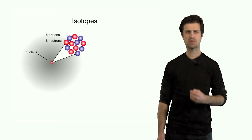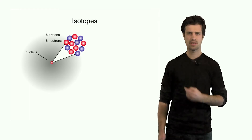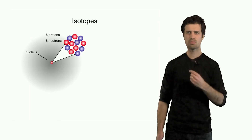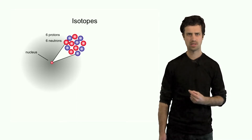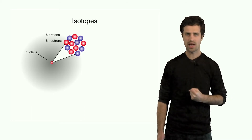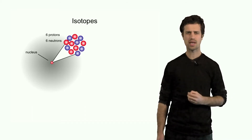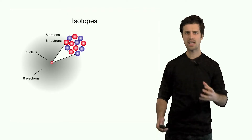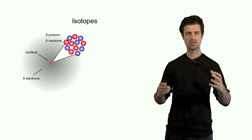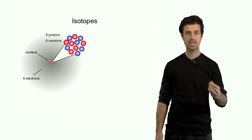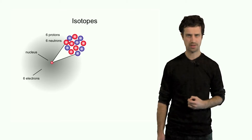Carbon atoms have six protons in the nucleus. This carbon atom also has six neutrons. The protons are positively charged, so I have six positive charges. The atom also has six electrons, which are negatively charged. So the atom as a whole has no charge — it is neutral. Six plus charges and six negative charges compensate each other.